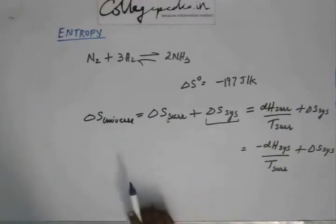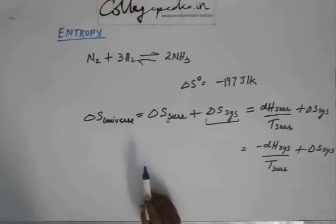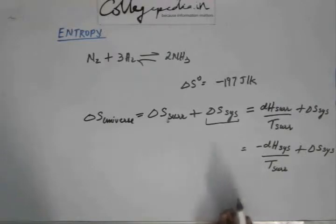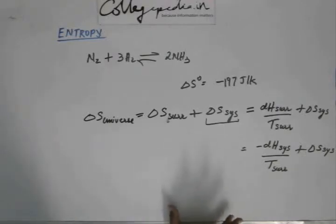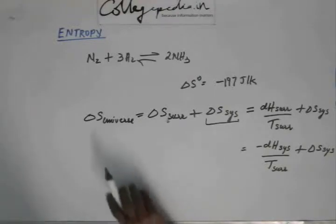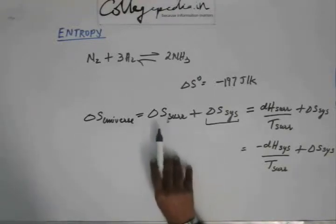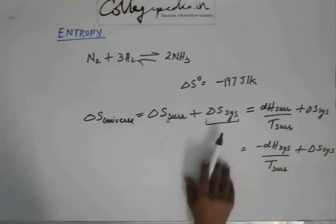Delta S of universe equals delta S of system plus delta S of surrounding. If delta S of universe is greater than 0, then the reaction is spontaneous; otherwise it is not spontaneous. Delta S of universe is calculated as delta S of surrounding plus delta S of system.